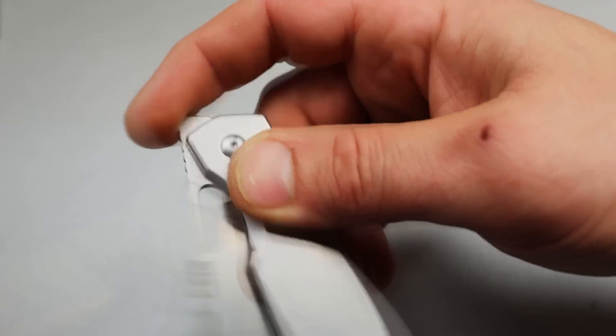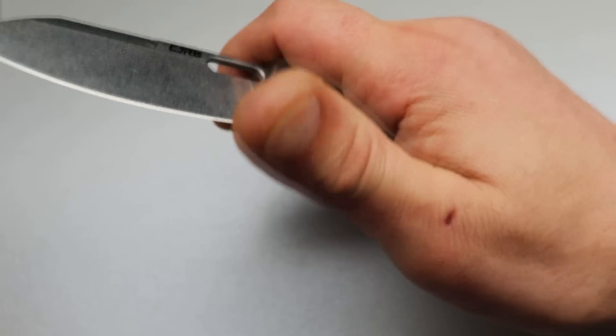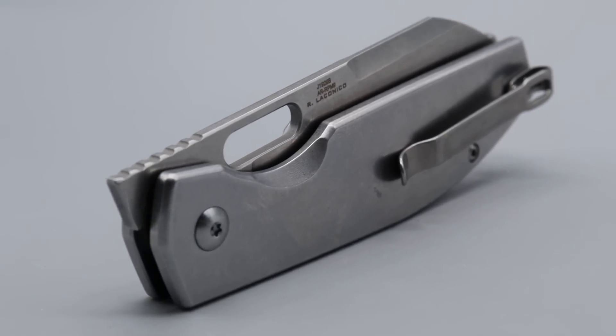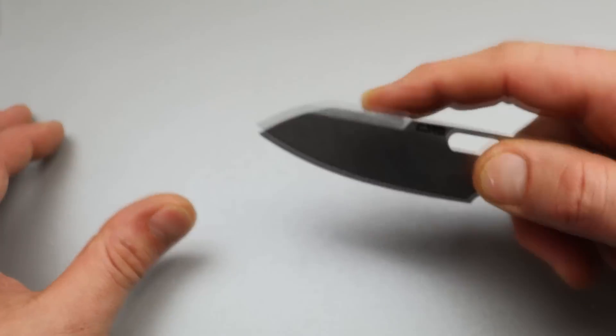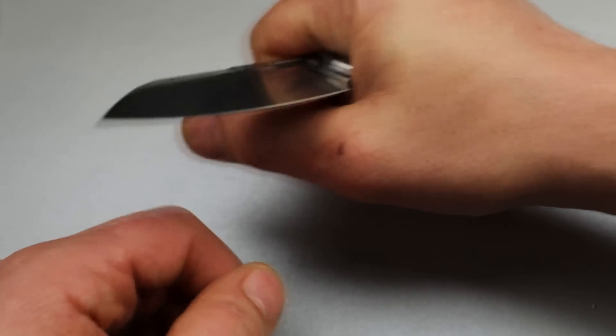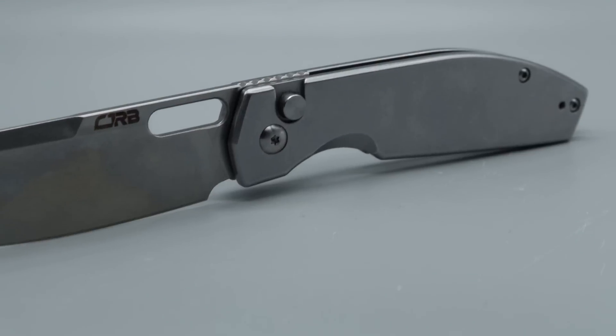And the front flipper actually works really good on this. It's very easy to flick in all ways. And the comfort, the blade shape is going to be really good for utility cuts. It's going to be a good slicer. You could turn it around and cut straps.